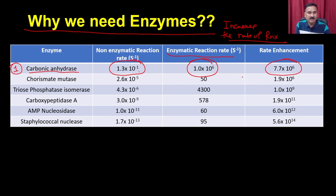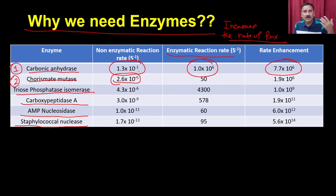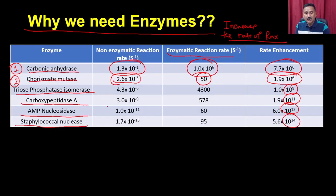Whereas if you have the enzyme, the reaction rate is 10 to the power of 6, which means there is a rate enhancement of approximately 10 to the power of 6. The same is true for other enzymes like chorismate mutase, triosephosphate isomerase, carboxypeptidase, AMP nucleosidase, and staphylococcal nuclease. In the absence of enzyme, reaction rates are very, very low, whereas in enzymatic reactions you can have 50 reactions per second - there will be enhancement of 10 to the power of 6, 9, 11, 12, and 14.